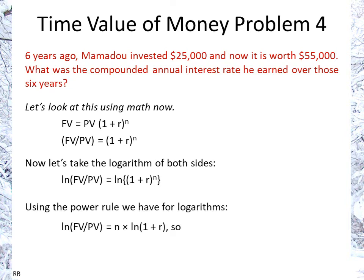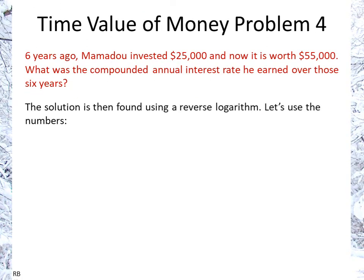We take advantage of the power rule: the logarithm of something to the power n is n times the logarithm of that something. So we divide both sides by n, which gives us the logarithm of (1 + r) — what we're trying to find.